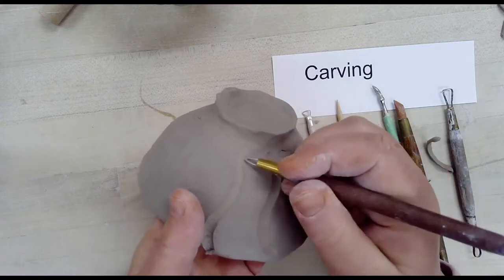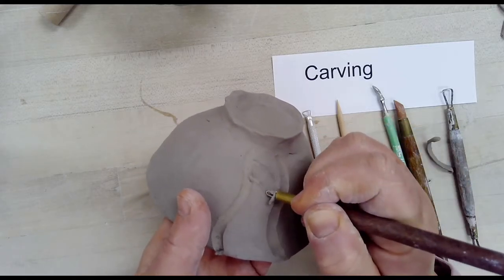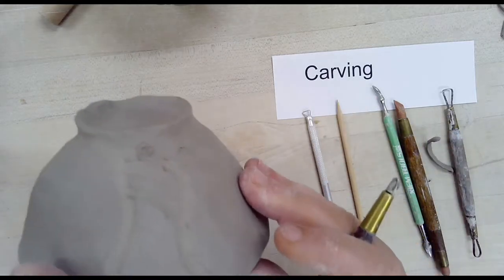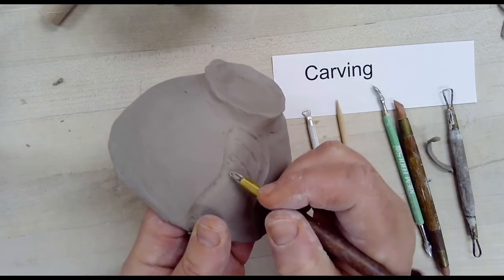Again, you will want to support your bowl from the inside as you do this to not distort the walls of your bowl. It is leather hard but it could still bend and move in ways that are not good for the bowl.